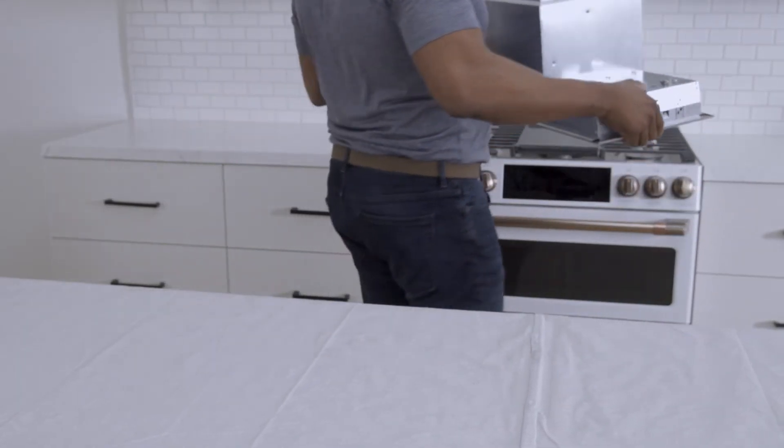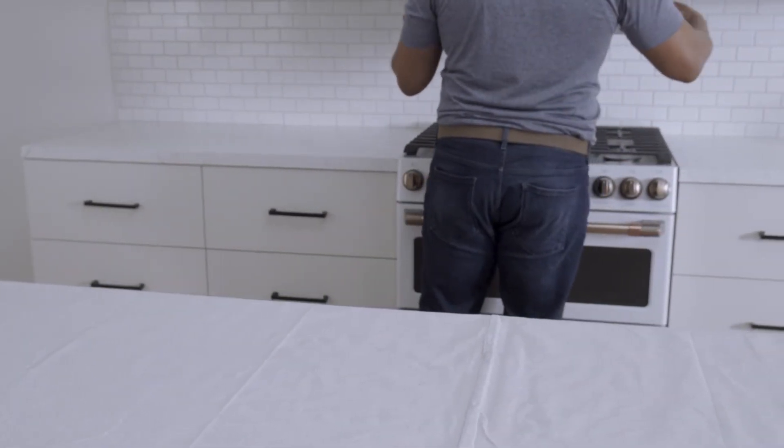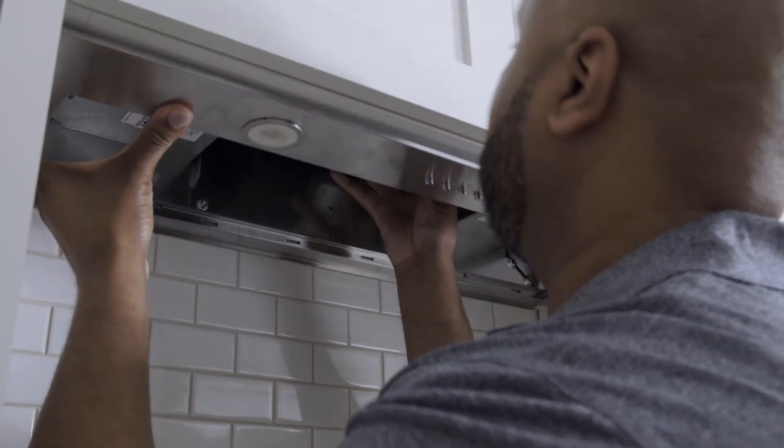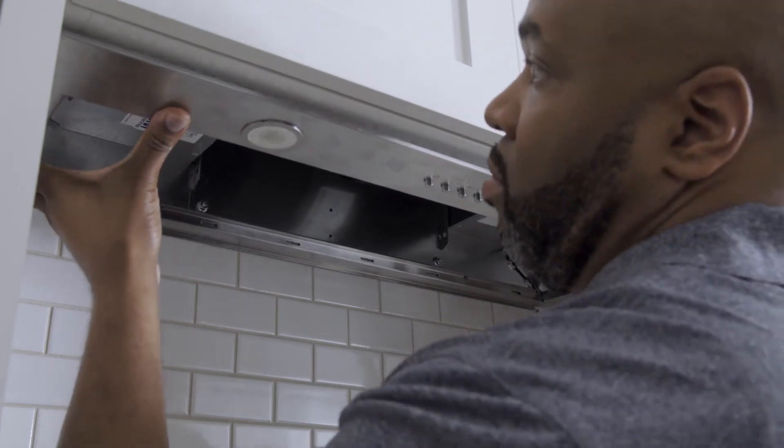For vertical installs, you are now ready to install the unit. To install, just insert the unit until you feel a click from both sides of the unit.